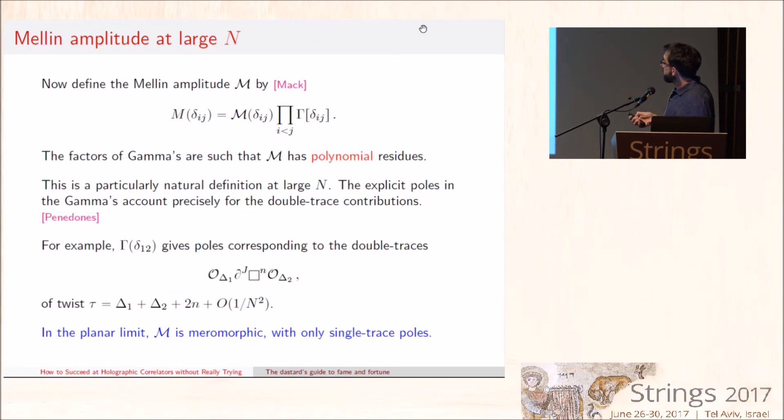Now, if you do what Mack instructed us to do to extract a product of gamma functions, then this curly M has even simpler properties. In particular, the factorization is such that the factorization has polynomial residues, and the structure of these gamma factors is particularly natural for a large-N theory because these gamma functions precisely capture the contribution of the double trace operators.